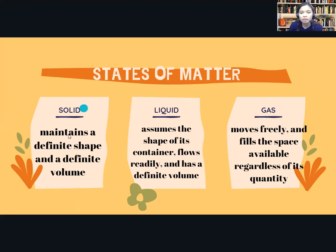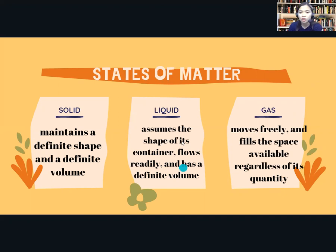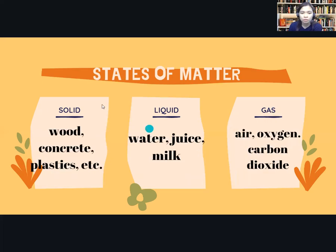When we say solid, it maintains a definite shape and a definite volume. Liquid assumes the shape of its container, flows readily, and has a definite volume — so liquid copies the shape of its container and has a definite volume. Gas moves freely and fills the space available regardless of its quantity.